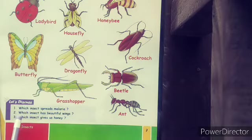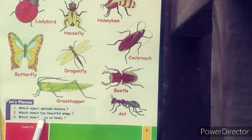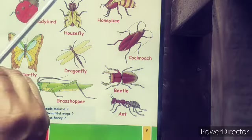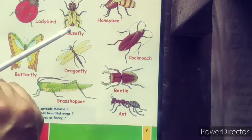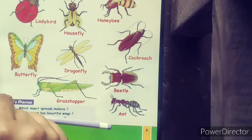Let's repeat these questions again. Which insect spreads malaria? Mosquito — very good. Which insect has beautiful wings? Butterfly — correct. Which insect gives us honey? Honeybee. Five insects' names: spider, housefly, honeybee, beetle, ant.